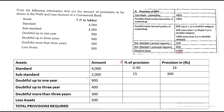For doubtful up to one year, the rate is 25%, so 900 × 25% = 225. Up to three years, the rate is 40%, so 400 × 40% = 160. For doubtful more than three years, it is 100%, so 300 × 100% = 300. For loss-making assets, also 100%, so 500 × 100% = 500.